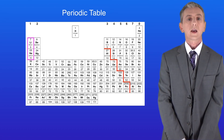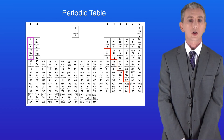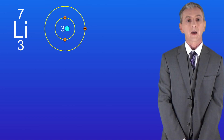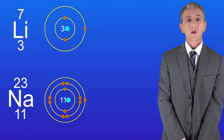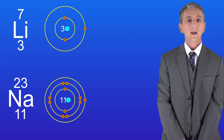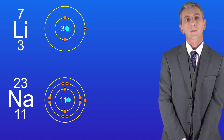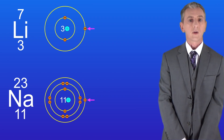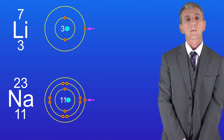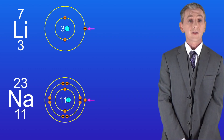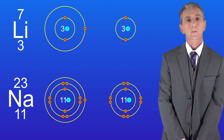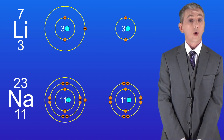We can see this with the elements lithium and sodium, which are in group one. Lithium atoms have got three protons in their nucleus and three electrons. Sodium atoms have got eleven protons in their nucleus and eleven electrons. Both of these elements have got one electron in their outer energy level, and that's why they're in group one. When they react, these elements lose their one outer electron, and as you can see they now have a full outer energy level.